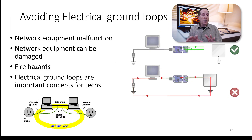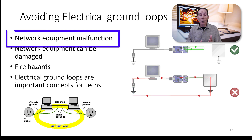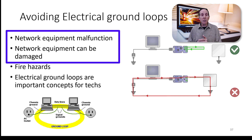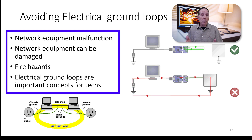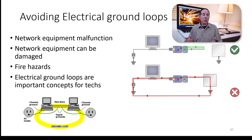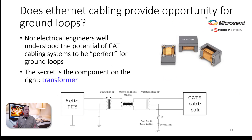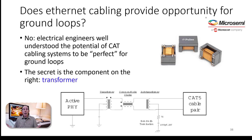When you have this unwanted current, even though it's small, it can cause network equipment malfunction, and network equipment can be damaged by this current. If it's extreme, it can cause fire hazards. Electrical ground loops are important for every tech to understand. Ethernet cabling connecting computers across sometimes 80 meters of distance means those two computers may have different ground voltages — so the potential for ground loops is very high.